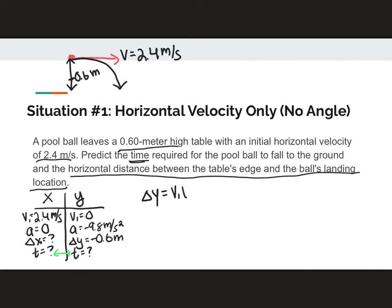So delta Y equals Vi T plus 1/2 A T squared. I can get rid of this Vi T off the bat. And then I will be solving, rearranging my equation for T. I'm going to skip those steps there. That is something you should be writing out.